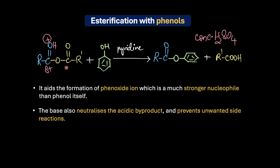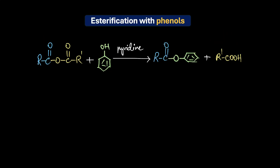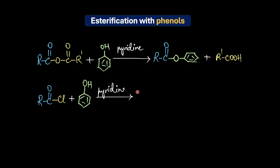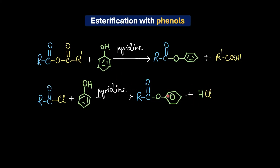Now what does the reaction with acid chloride look like? Again pretty similar — the reaction with acid chloride also gives us a phenolic ester. But the byproduct in this case is HCl. The use of a base is absolutely non-negotiable here; we have to use the base to neutralize the HCl byproduct and to prevent any kind of undesired acid-catalyzed reactions.